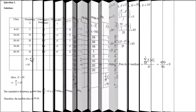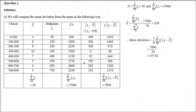Now moving to question 2, which has three parts — all NCERT questions. Most questions in this exercise are based on mean and median, and these examples specifically cover grouped or continuous frequency distributions.